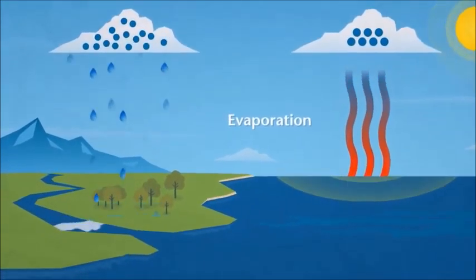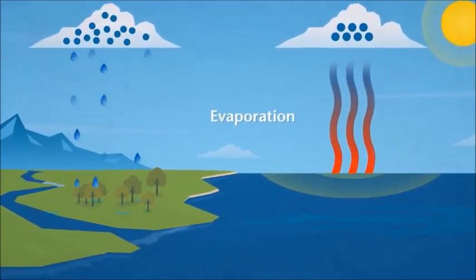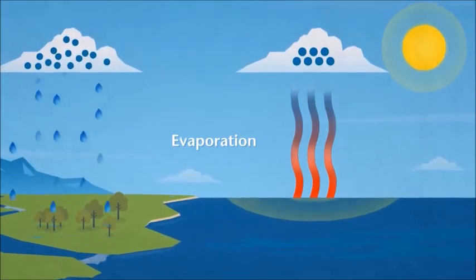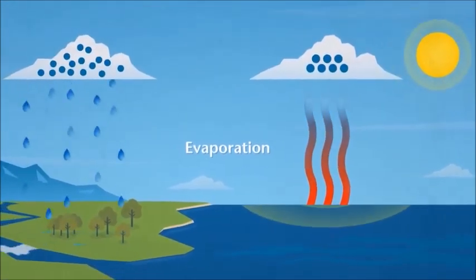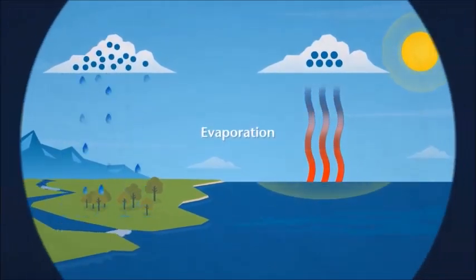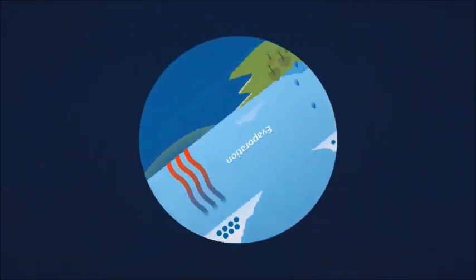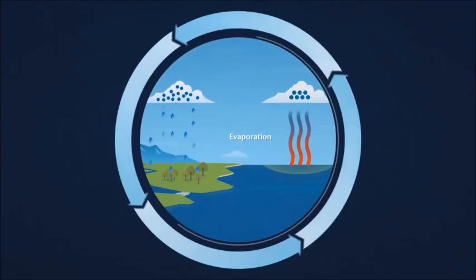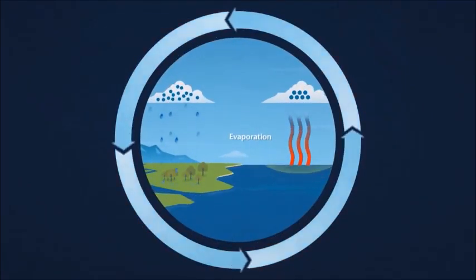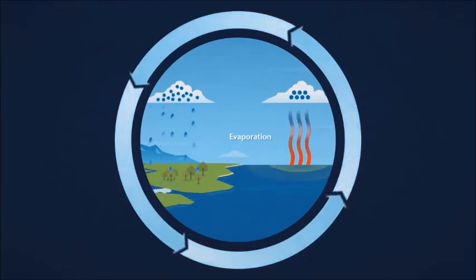Raindrops fall on the ground surface where the sun can shine on them and the whole process happens again. This is called the water cycle and keeps water moving from the ground to the sky, providing the water needed for plants, animals and people to survive. So now you know!